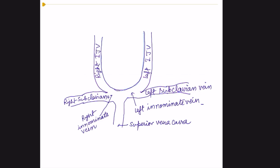This is a schematic diagram of subclavian anatomy. The subclavian vein is a deep vein and is very commonly used for CVP line insertion. The subclavian vein is a continuation of the axillary vein, and at the level of the sternal notch, the subclavian vein meets the IJV to form the right innominate vein, or brachiocephalic vein, which continues into the superior vena cava, which ultimately drains into the right atrium.